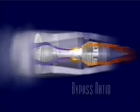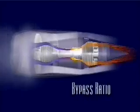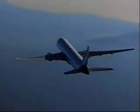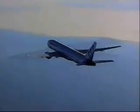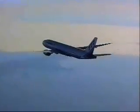The ratio of this air bypassing the core to the air passing through the core is called the bypass ratio. Because of its huge volume, the bypassed air only needs to accelerate a small amount in order to develop an enormous amount of thrust.